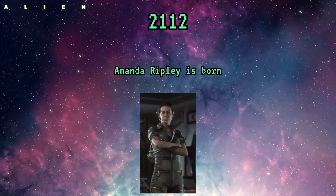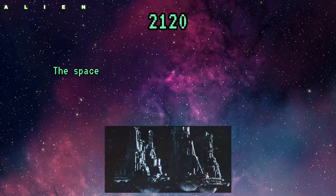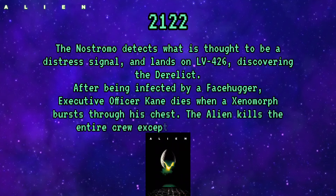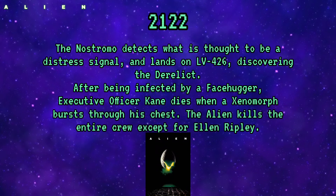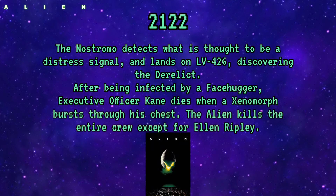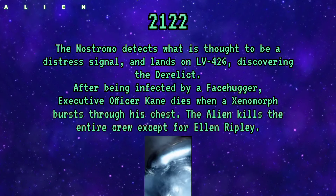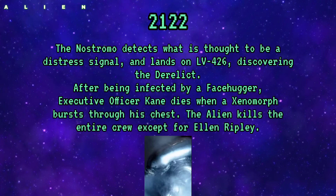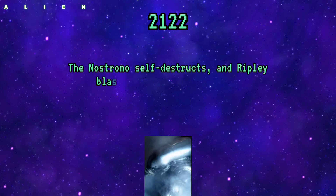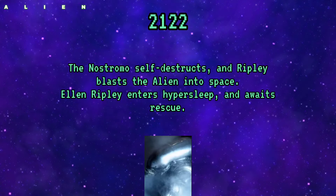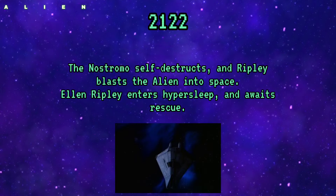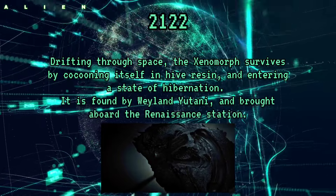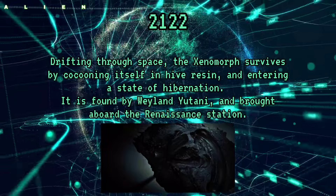2112: Amanda Ripley is born. 2120: The space-towing vessel Nostromo leaves Earth. 2122: The Nostromo detects what is thought to be a distress signal and lands on planetoid LV-426, discovering the derelict. After being infected by a facehugger, Executive Officer Kane dies when a xenomorph bursts through his chest. The alien kills the entire crew except for Ellen Ripley. The Nostromo self-destructs and Ripley blasts the alien into space. Ripley enters hypersleep aboard the Narcissus. Drifting through space, the xenomorph survives by cocooning itself in hive resin and entering a state of hibernation.